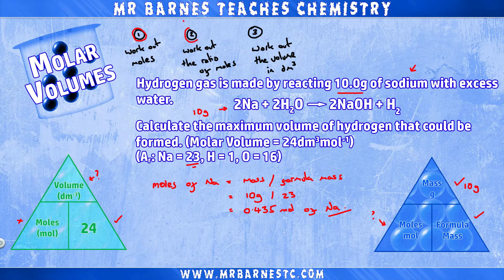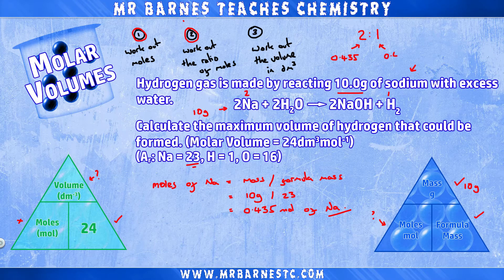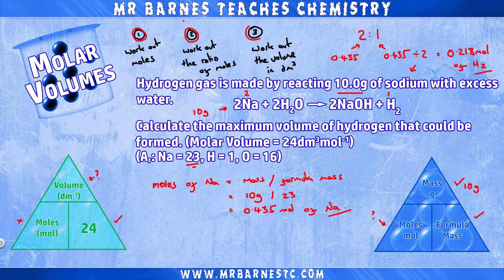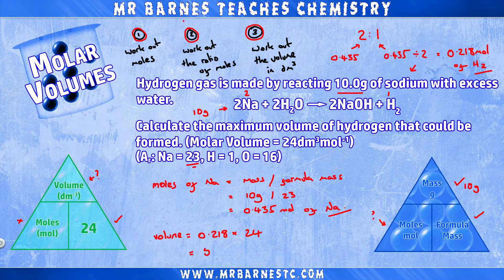Step two: the ratio is 2:1 — two sodiums to one hydrogen gas. So for every 0.435 moles of sodium I need half of that for hydrogen: 0.435 ÷ 2 = 0.218 moles of hydrogen. Step three: volume = moles × molar volume = 0.218 × 24 = 5.23 decimetres cubed for the final answer.